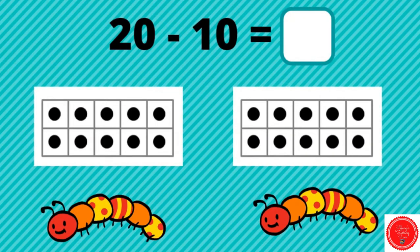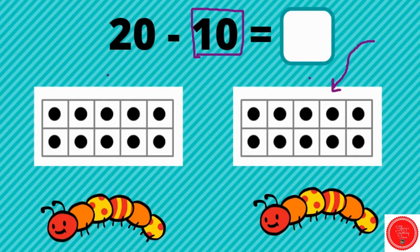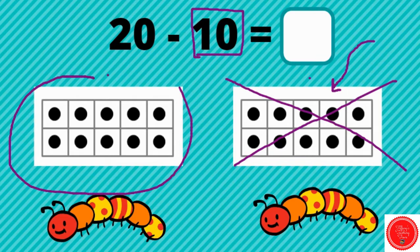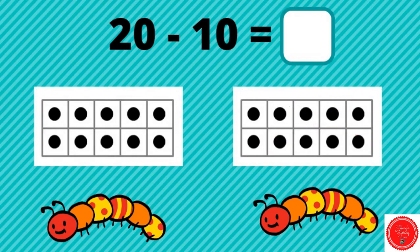How about this one? 20 minus 10. So we're starting off with 20. This is 10, and this is 20. How many do we need to take away? 10. I know that this 10 frame is worth 10, so I don't have to cross them out one by one. I can just cross out the whole 10 frame. Now how many do we have left? 10. We don't have to count one by one — we know that's worth 10. So 20 minus 10 equals 10. Nice work.